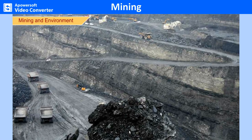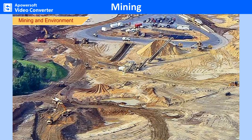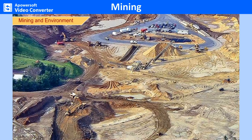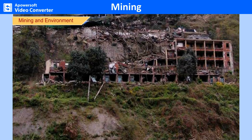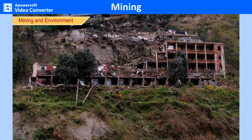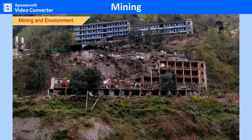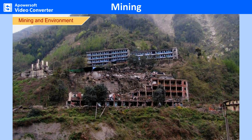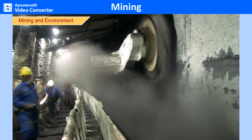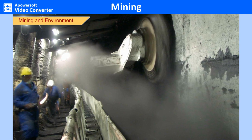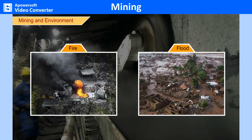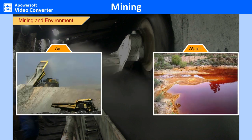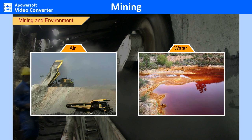Mining has severely impacted the environment. Large agricultural lands have been destroyed and natural vegetation has been wiped out from large areas. These areas often flood due to lack of proper drainage. In hilly areas, mining often leads to landslides that kill people and animals and destroy property. Miners work under dangerous conditions — poisonous gas may be emitted from mines, and hundreds of miners die in mine fires and sudden flooding every year. Mining activities lead to air and water pollution and the displacement of people.